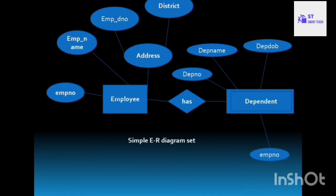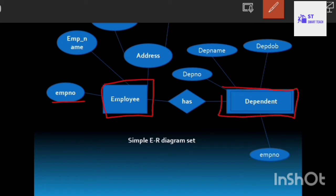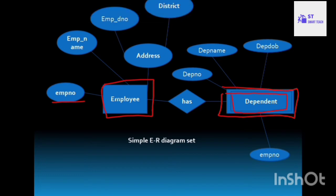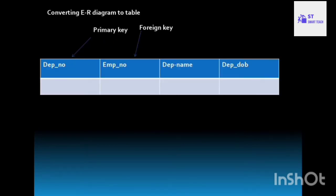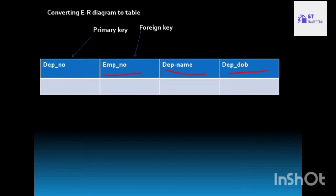If the primary key of the strong entity is present in the weak entity, then it is treated as a foreign key column. For example, employee is a strong entity and dependent is a weak entity because it does not contain a primary key. The dependent table has columns: dependent number, dependent name, dependent date of birth, and employee number. Dependent number is the primary key and employee number is treated as a foreign key.